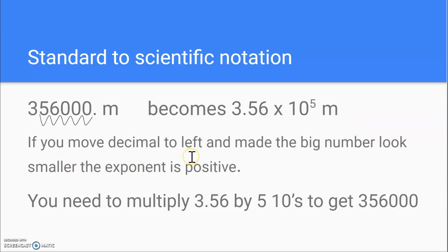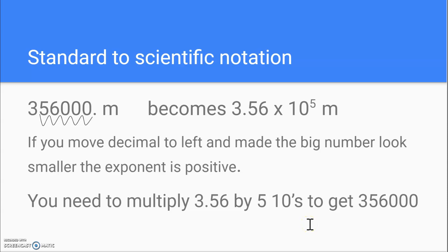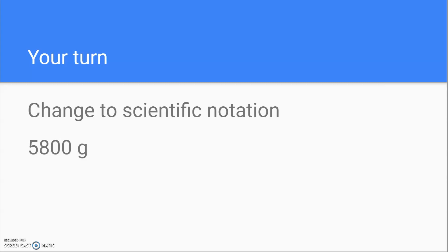If you move the decimal to the left, as we did in this example, and made this big number look smaller, the exponent is positive. So this 5 is a positive 5. In other words, you need to multiply 3.56 by 5 tens to get the number 356,000. Now it's your turn — pause the video and see if you can change 5,800 grams into scientific notation.